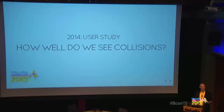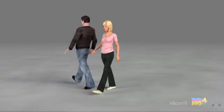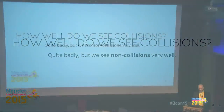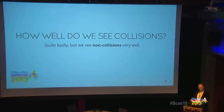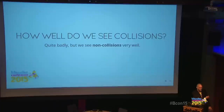We wanted to do a user study to see how well people respond to collisions — does it really matter if you're accurate to a centimeter? We had videos; this is a still of one. In the worst case, ninety percent of people thought two characters were colliding, whereas looking from the other side it was clear they don't. On the whole, we're quite bad at recognizing collisions, but quite good at recognizing non-collisions. My previous research was a little too eager to say people were colliding, so we were optimizing in the wrong way.